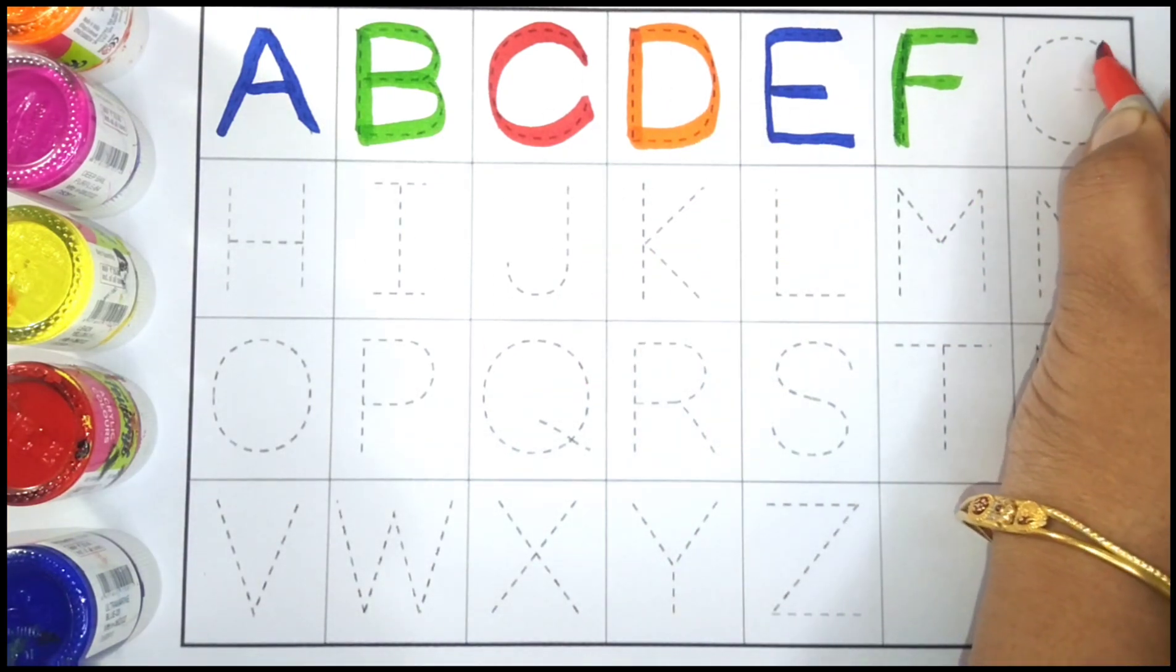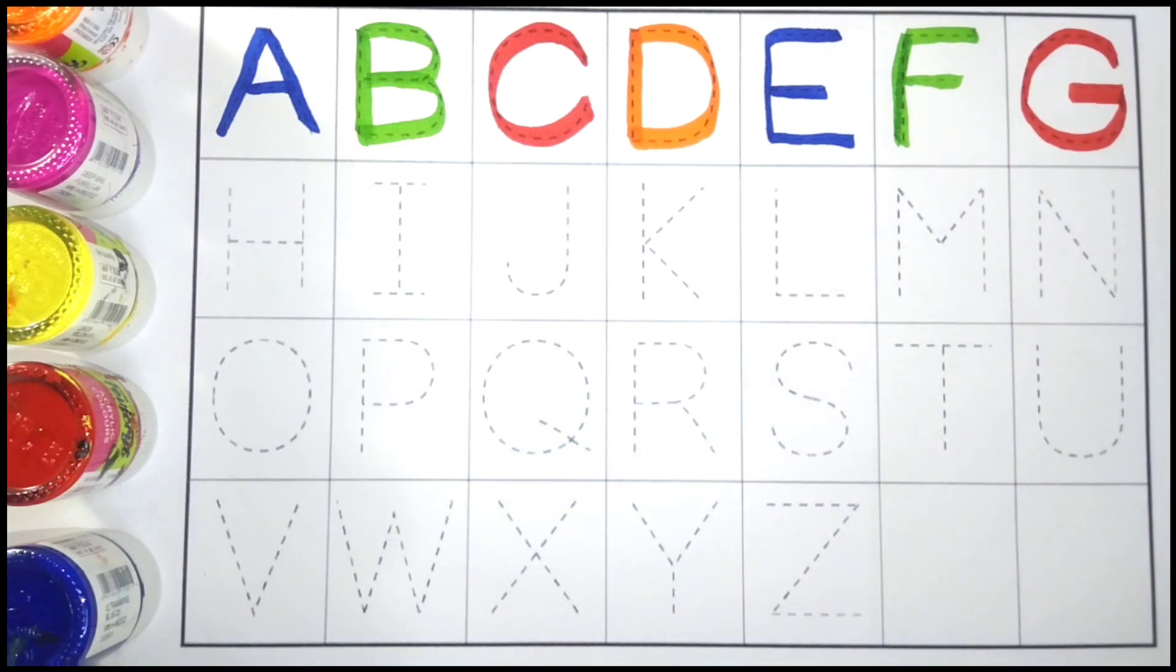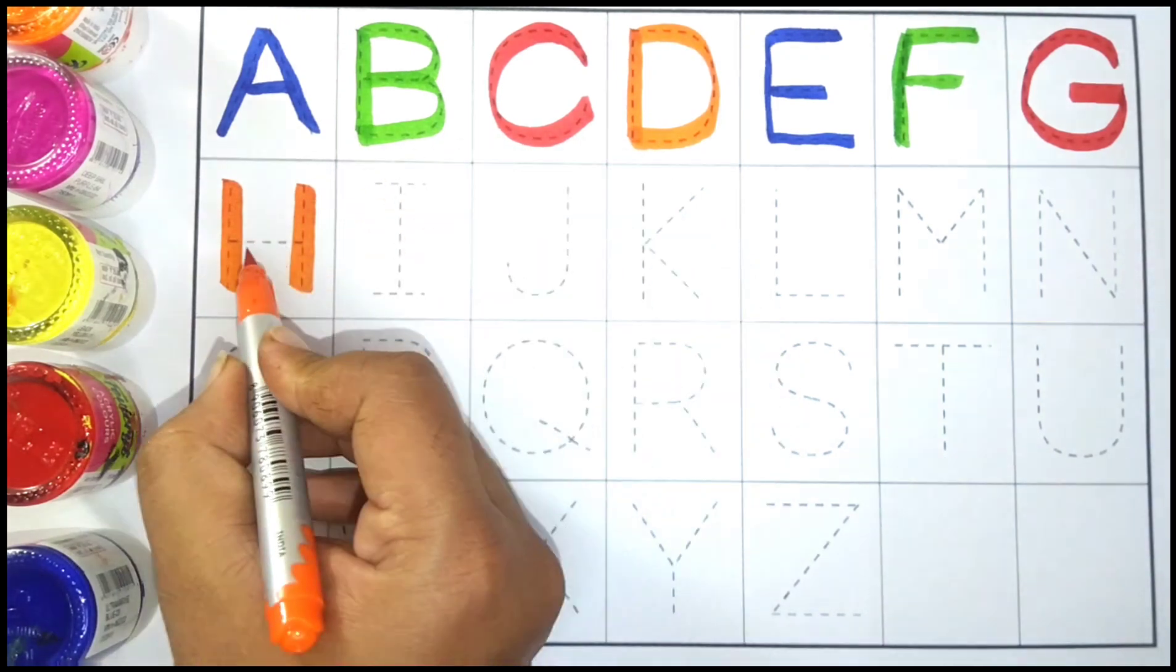Red color. G for Goat. Orange color. H for Hen.